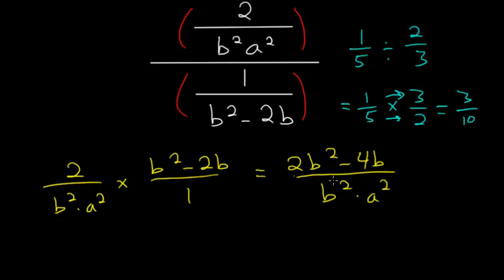From here, the only way we can simplify this is to factor out a b from the top since there's one in each term, and then we can divide it by one of the b's from the bottom.